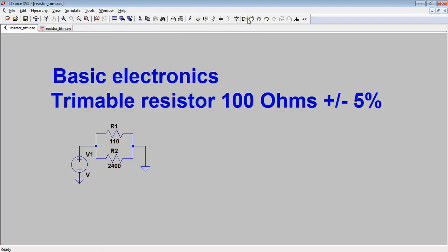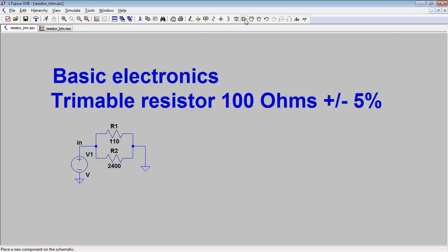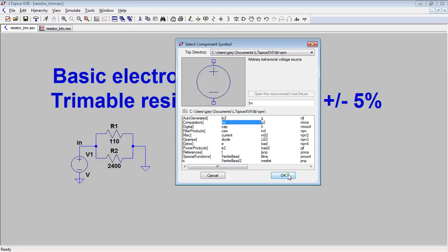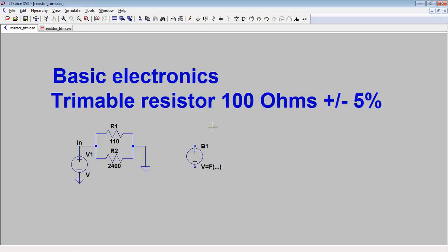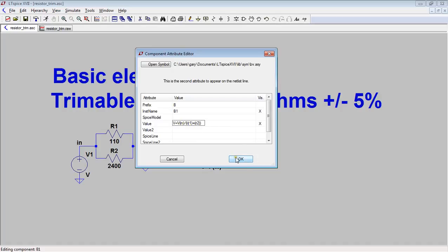And then 2400 there. Now the parallel resistor network will be 105 ohms. Okay, so how do I test this then? So what I need to do is put in here, and now I need to make a check to check my resistance. So if I use a behavioral voltage source and put in the equation V equals Vin voltage divided by current equals resistance. So Vin voltage divided by IR1 plus IR2, so voltage divided by the sum of the current is resistance.